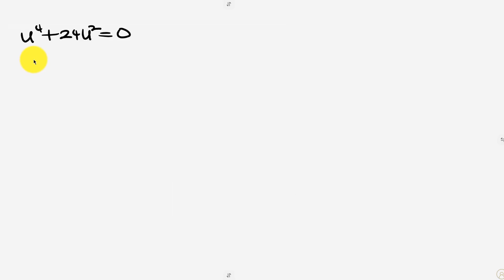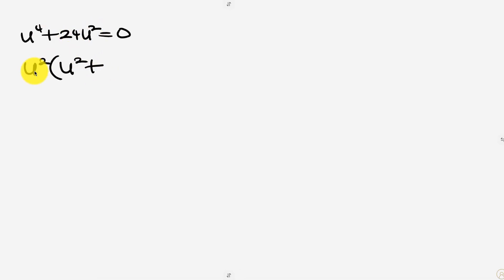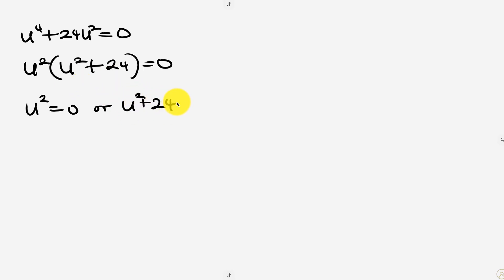Notice that u² is common, so we factor it out: u²(u² + 24) = 0. This gives us two cases: Case 1 — u² = 0, and Case 2 — u² + 24 = 0.